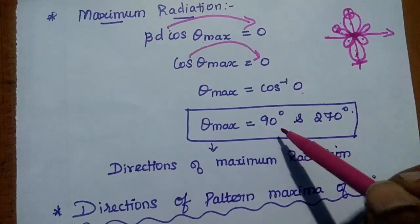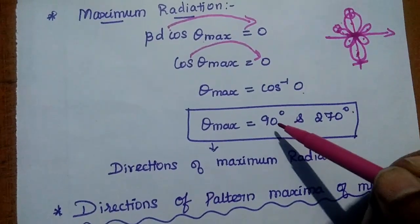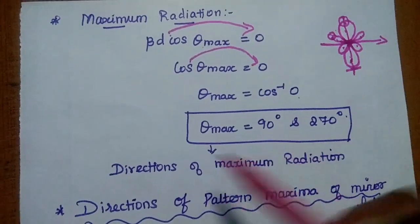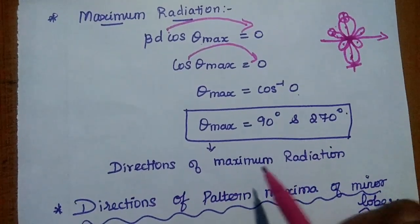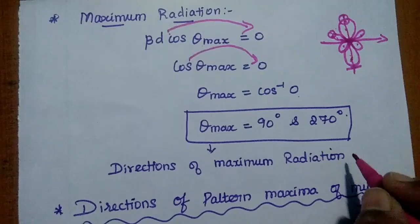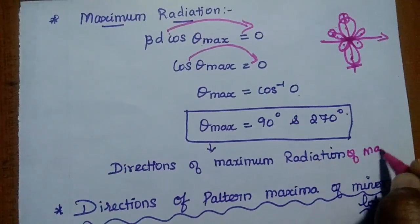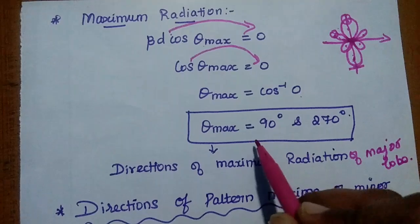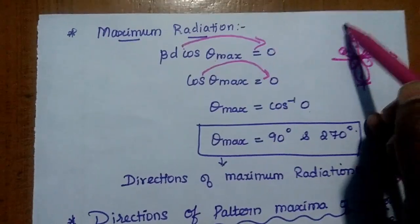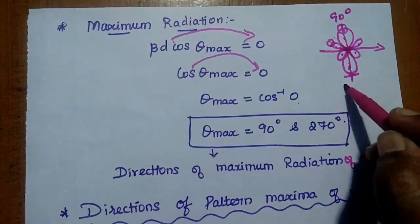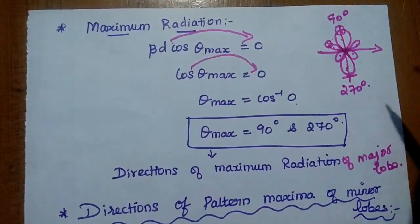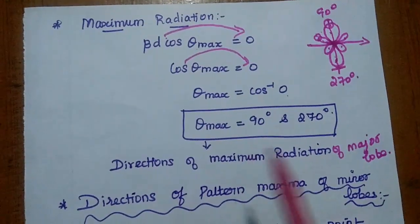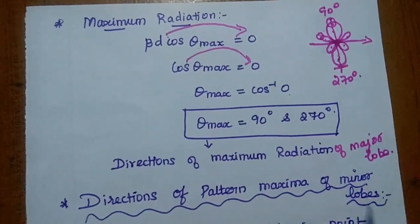cos(90°) = 0 and cos(270°) = 0. Therefore, the direction of maximum radiation of the major loop is at 90° and 270°. These are the values of maximum radiation for the major loop.